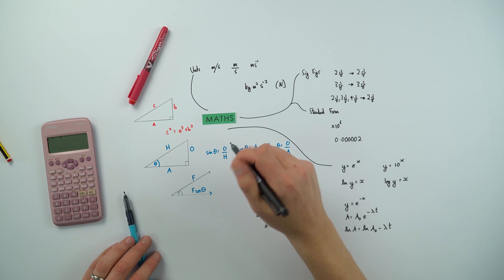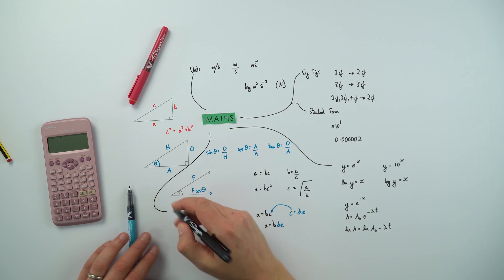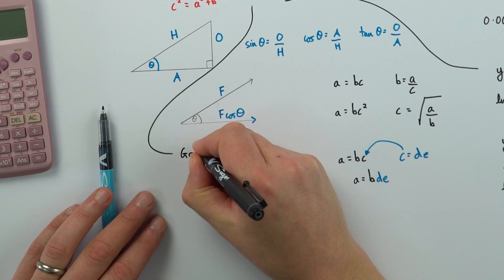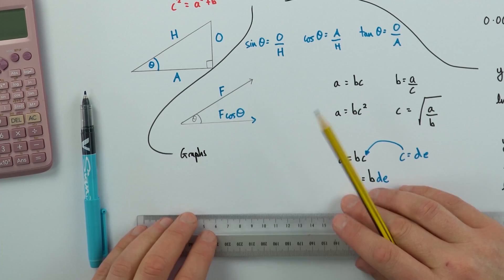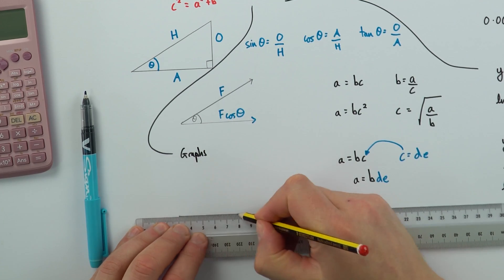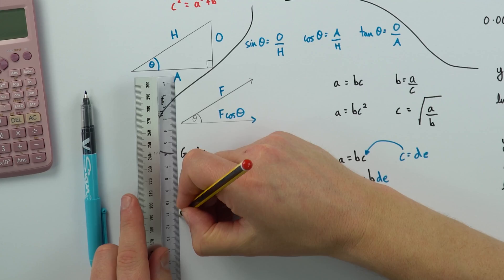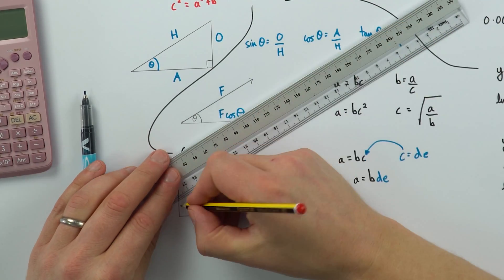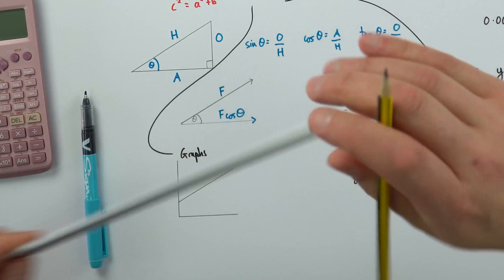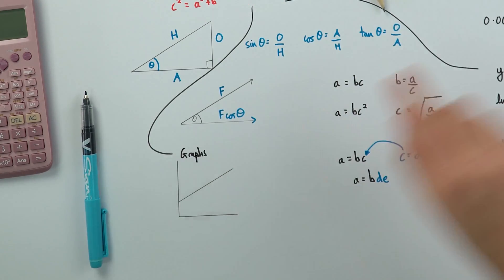And finally, the last bit I'd like to talk about, let's do it over here, is looking at graphs. And most of the time we tend to get graphs that have a line of best fit that maybe goes through some data. So perhaps we've done an experiment or you've been given some data and you might get a graph that looks like this.